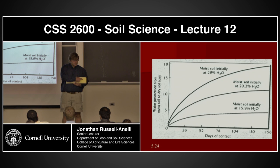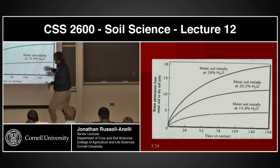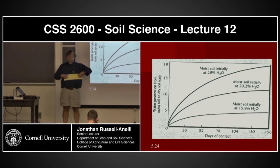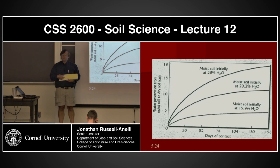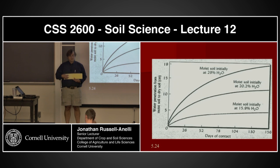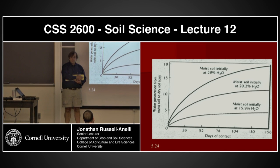The less water I have here, the more negative the matrix potential. I have three different events — here's time, and here's the water penetration from the moist soil to the dry soil. Moist soil in this case, I started at 15%. In this case, I started at 29%. Wetter soil at 29% is going to travel faster, and certainly farther.